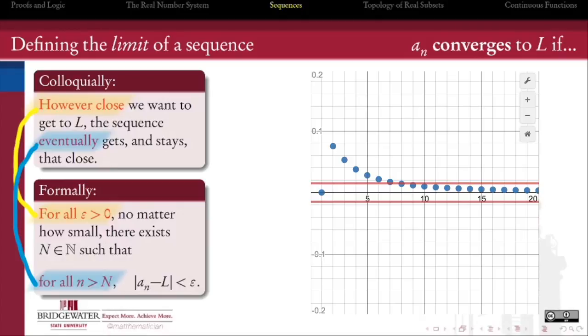Note the order of the quantifiers here. First, I get to pick any epsilon, setting you a target, and then you have to produce an N that hits that target. If a real number L that meets this criterion exists, we say that the sequence is convergent and that L is its limit.